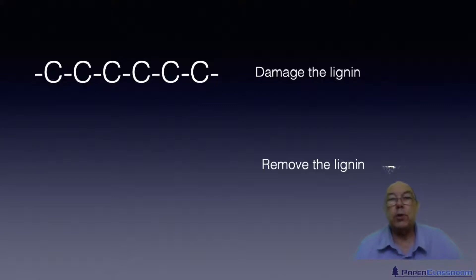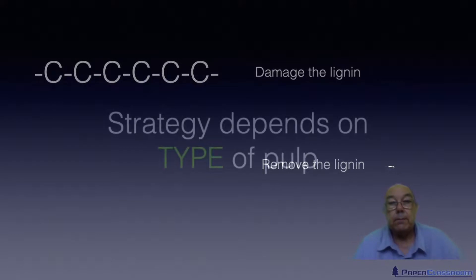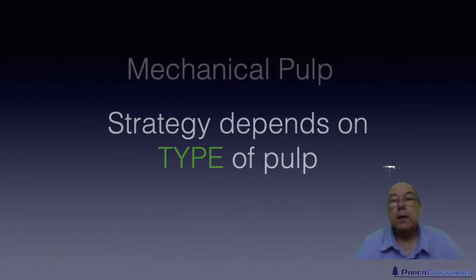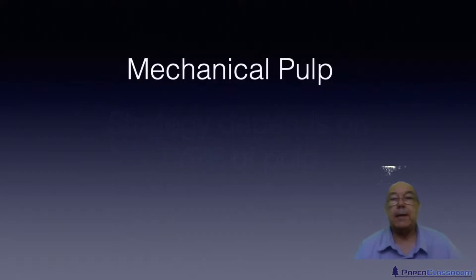And the strategy that you choose depends really on what the pulp is. So it depends on the type of pulp you've got there. For example, imagine you've got mechanical pulp. Mechanical pulp has all the lignin still in the fiber.